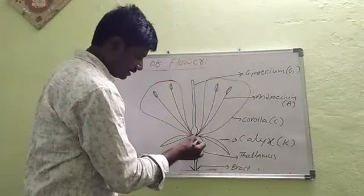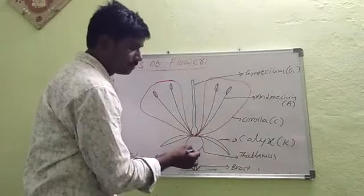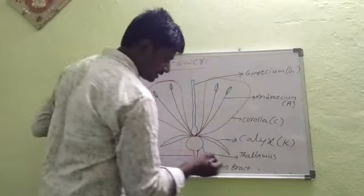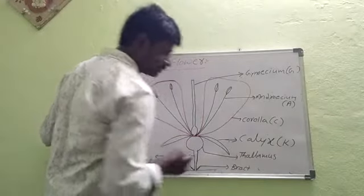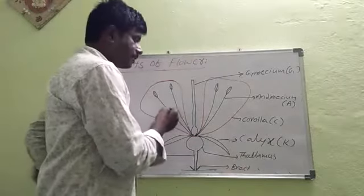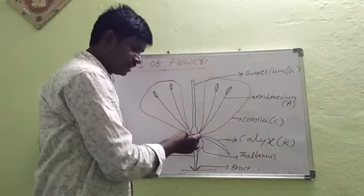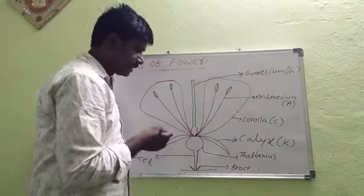The top of pedicel appears in convex shape. This convex shape structure is called thalamus. The remaining floral parts are present at the top of thalamus.